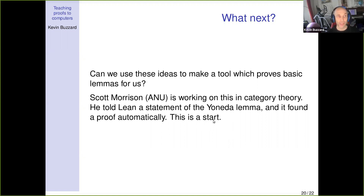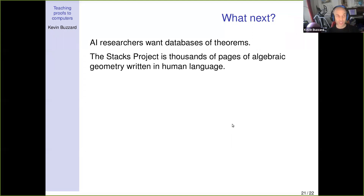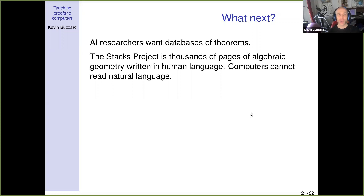AI researchers are convinced they could do a thousand times better than the Yoneda lemma, but they want to know what we know already. The Stacks Project is thousands of pages of algebraic geometry, mostly written by Johan de Jong, now at Columbia. It's written in human language, but AI hasn't cracked natural language yet, so computers can't understand it. It's like Bourbaki — very basic mathematics explained very clearly in human language — and my opinion now is he's chosen the wrong medium.